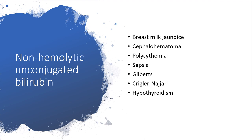If it is non-hemolytic unconjugated hyperbilirubinemia, we might be dealing with breast milk jaundice — about 80% of literature on neonatal jaundice suggests there is a substance in breast milk causing the jaundice. It could also be cephalohematoma when delivery required forceps assistance, polycythemia because newborns have high levels of red blood cells, sepsis, Gilbert syndrome, Crigler-Najjar syndrome types 1 and 2, or hypothyroidism.